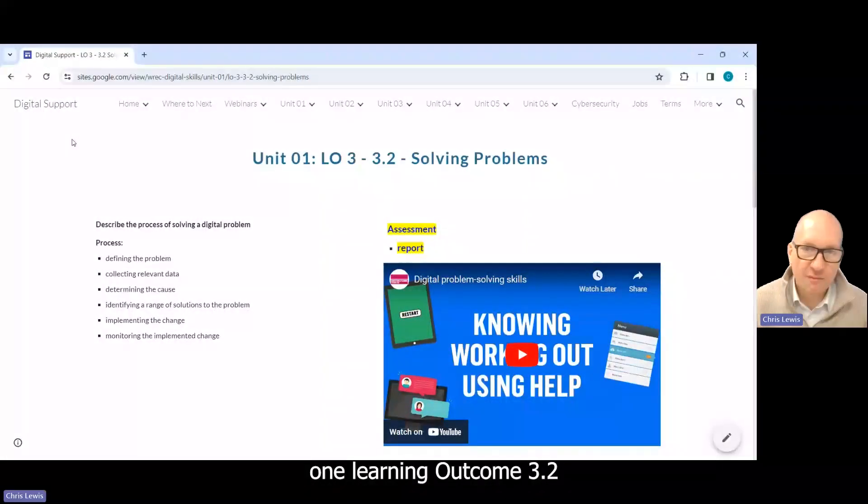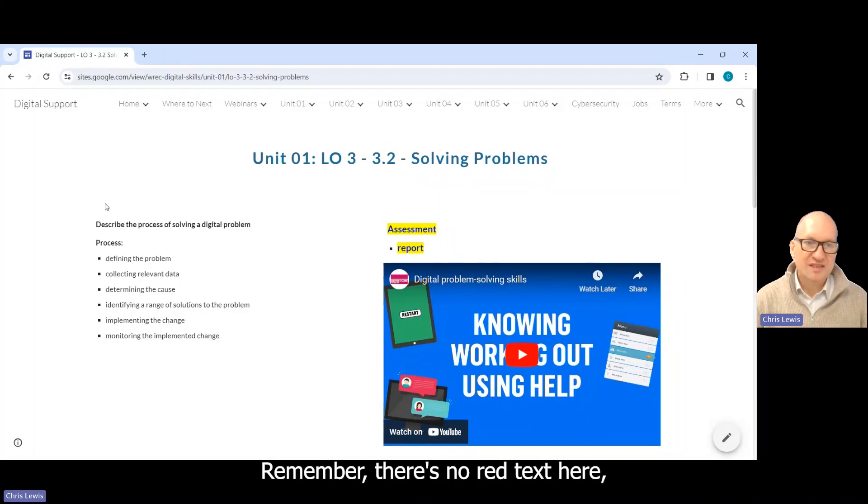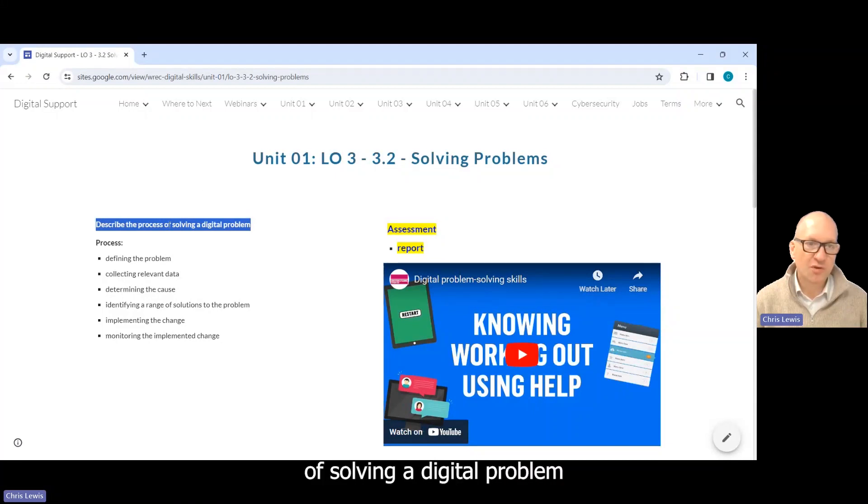Okay, we're here to talk about Unit 1, Learning Outcome 3.2: Solving Problems. Remember, there's no red text here, just some of this normal black text. Describe the process of solving a digital problem, so you can use at least three or four of these bullet points.